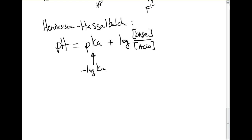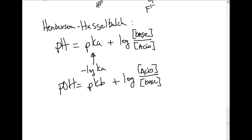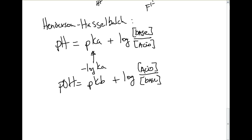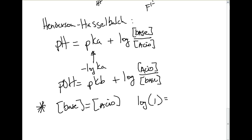We can also derive a related formula: pOH = pKb + log([conjugate acid] / [weak base]). One very important special case of Henderson-Hasselbalch: when the base concentration equals the acid concentration, you have log of 1, which equals 0. In that case, pH equals pKa — something very important to remember.